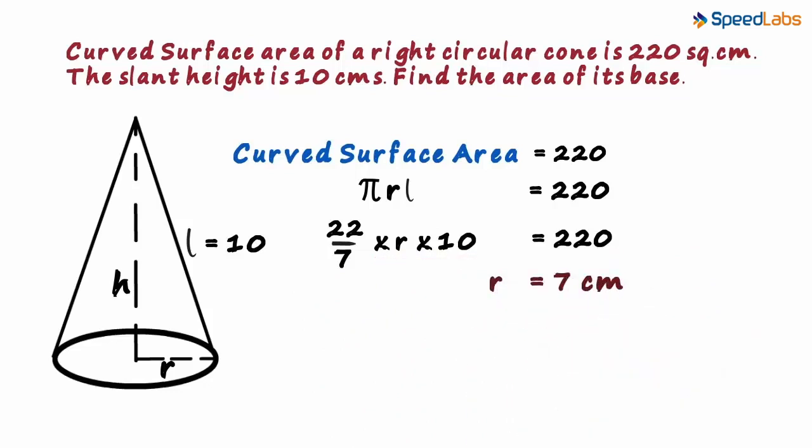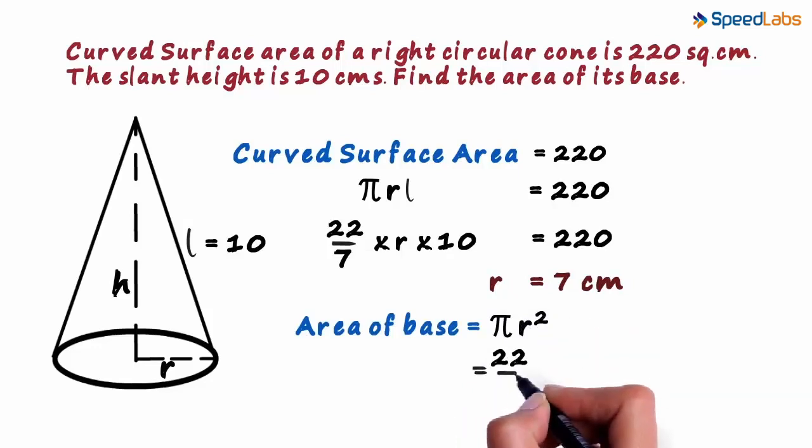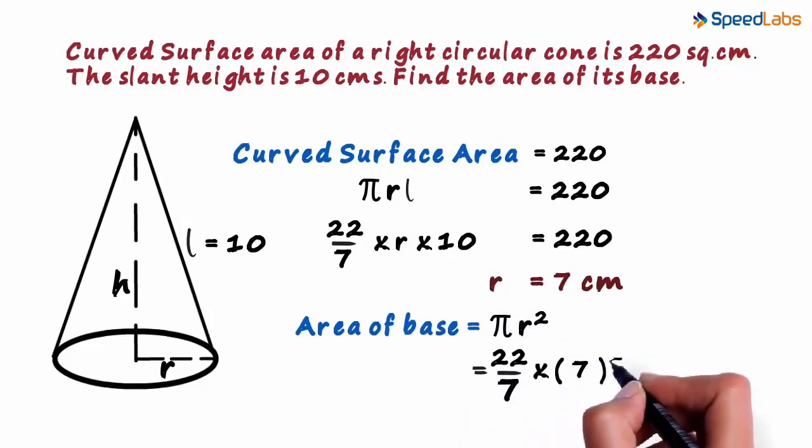Now we have all that we need to find the final answer. Area of the base is given as Pi R squared. That will equal 22 by 7 multiplied by 7 squared. So the area of the base is 154.